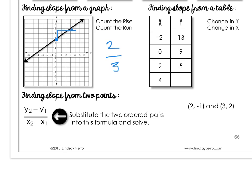To find slope from a table, you're going to do the change in Y over the change in X. The change in Y here is decreasing by 4, and the change in X is increasing by 2. So negative 4 over 2 — always simplify if you can — simplifies to negative 2.